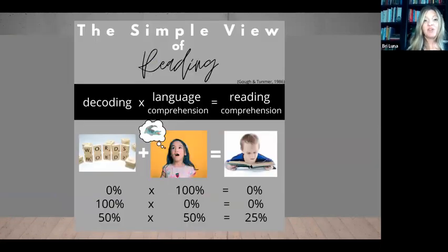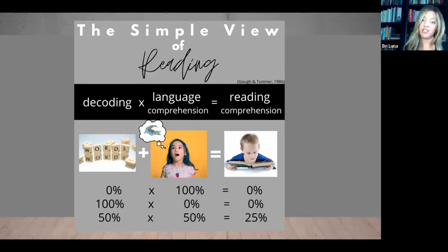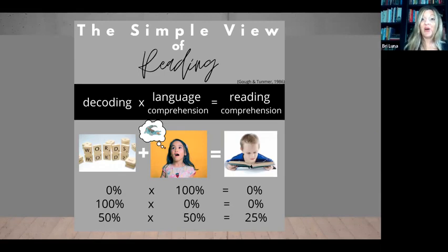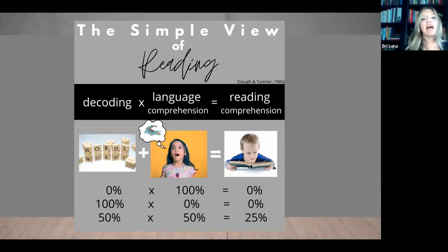The simple view of reading: if you can't decode but you have a lot of language comprehension, you can't read — reading comprehension will fail. And the opposite: if you can decode all the words fluently and accurately but can't attach meaning, reading comprehension also fails. We need to really look at kids struggling with reading and identify where they are in this simple view of reading.